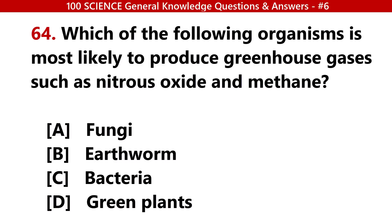Which one of the following organisms is most likely to produce greenhouse gases such as nitrous oxide and methane? Answer D: Green plants.